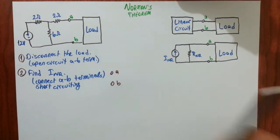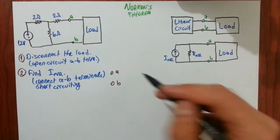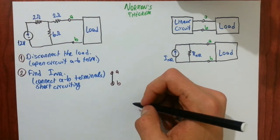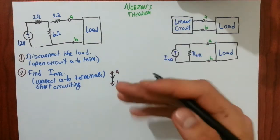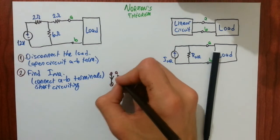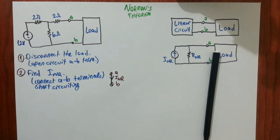That's terminal A, that's terminal B. You have removed the load already. And you will connect these two with a wire. You will short circuit them. And you will find this current flowing from A to B. This is your Norton INR current. You will find that one.